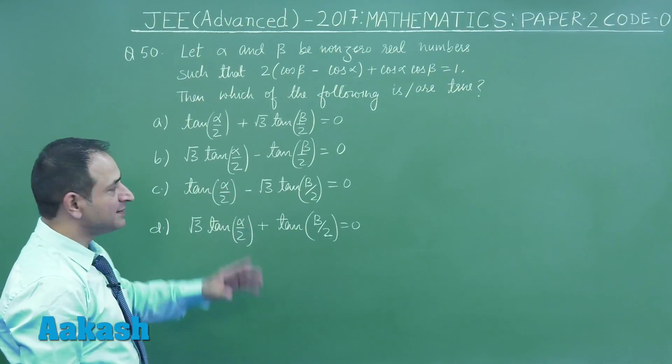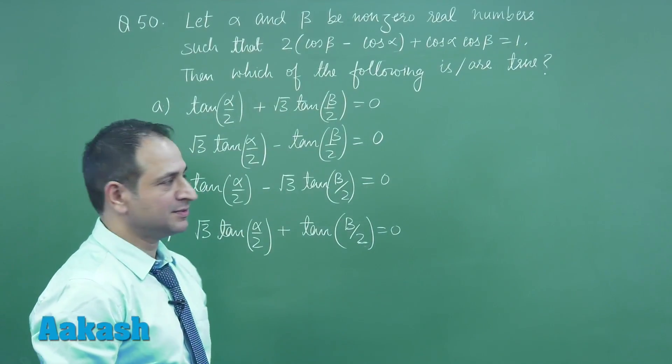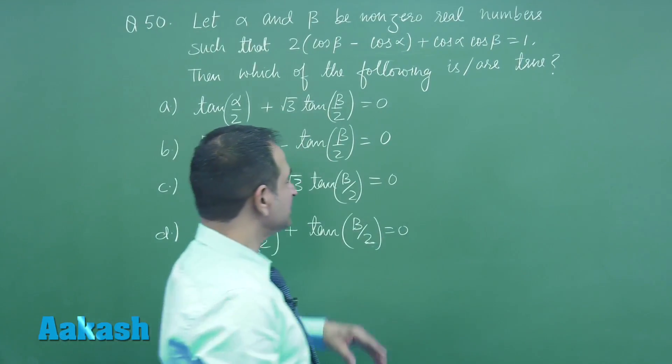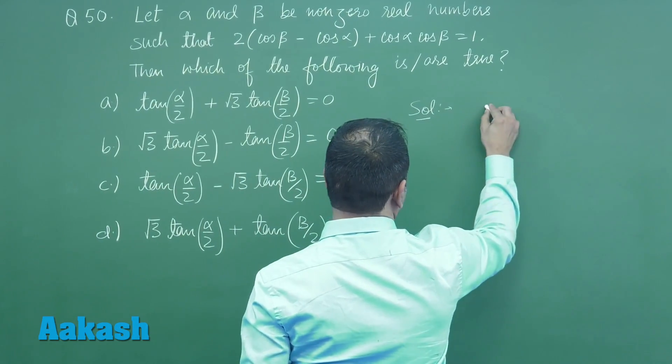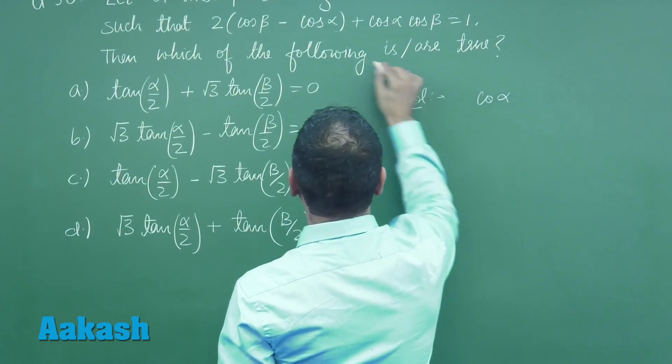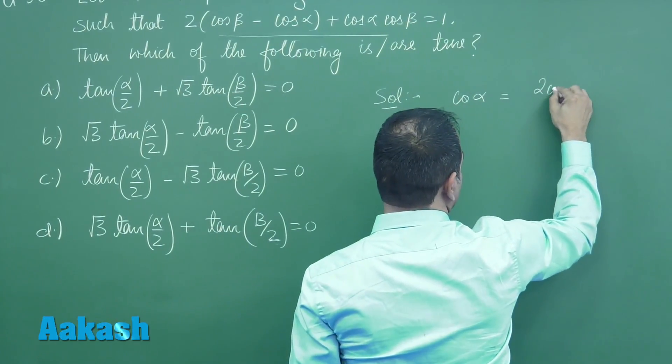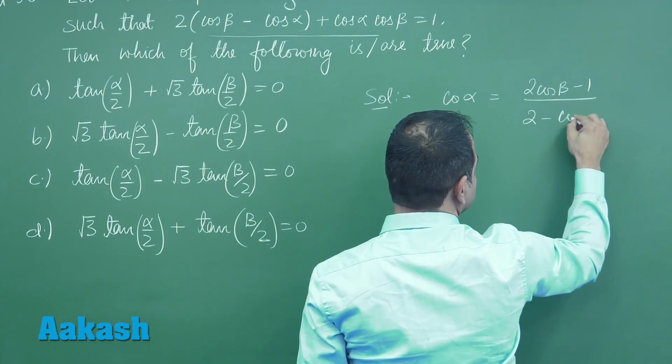It is given that alpha and beta are two real numbers which are satisfying this equation and we have to choose the right option. Let us go for the solution here. You can see this is actually an easy problem. If you get cos alpha from here, it is 2 cos beta minus 1 upon 2 minus cos beta.